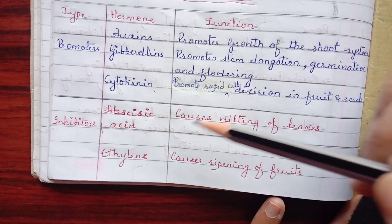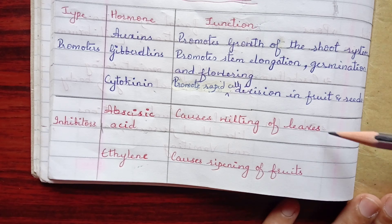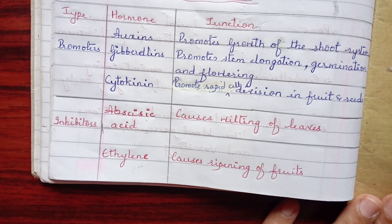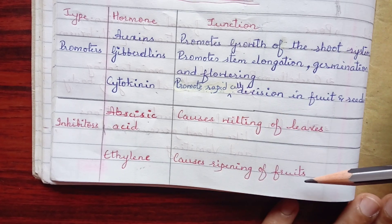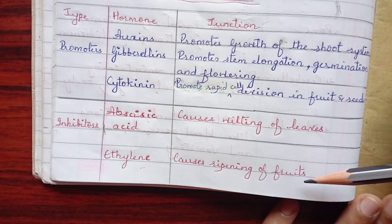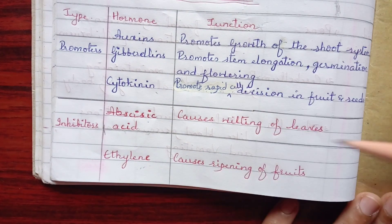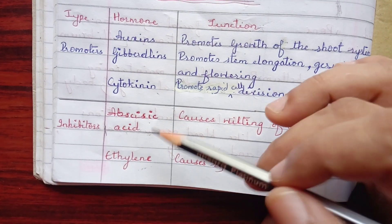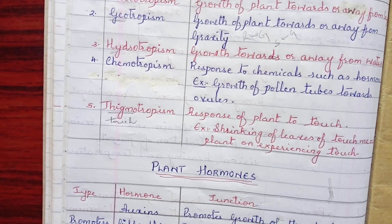Now for inhibitors — abscisic acid causes wilting of leaves, meaning the drying out, yellowing, and falling of leaves. Ethylene helps in the ripening of fruits; the sweet fragrance you get from ripe fruit is actually due to ethylene. So ethylene is for fruit ripening, and abscisic acid is for wilting of leaves.